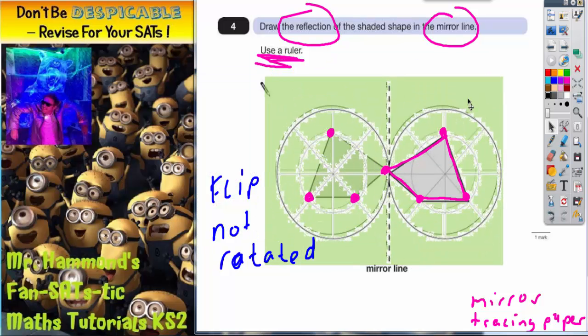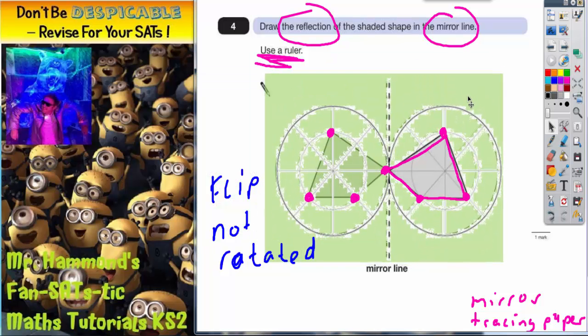You place it on the mirror line and where you placed it is where you need to draw the reflected shape. So there's three ways of doing it: way number one is to use the mirror, way number two is to measure the distances from each corner to the mirror line and repeat the same distances on the other side, and way number three is to trace the shape, flip the paper over onto the back...